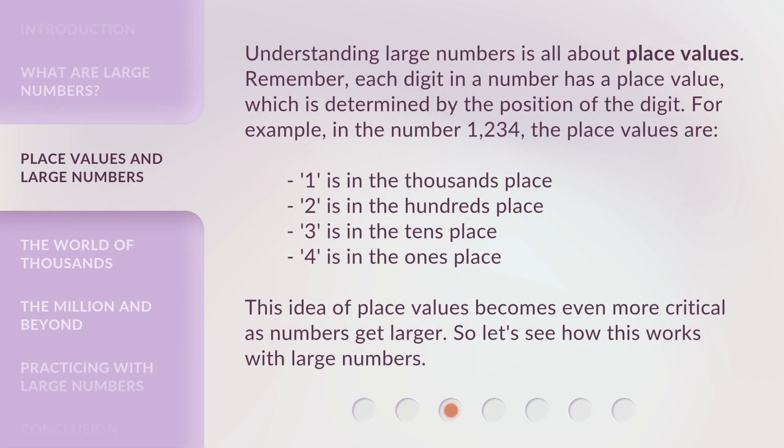Understanding large numbers is all about place values. Remember, each digit in a number has a place value, which is determined by the position of the digit. For example, in the number 1,234: 1 is in the thousands place, 2 is in the hundreds place, 3 is in the tens place, and 4 is in the ones place.